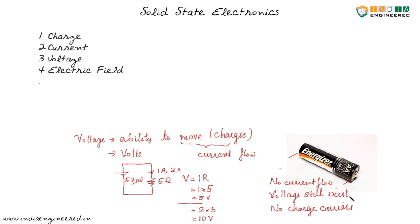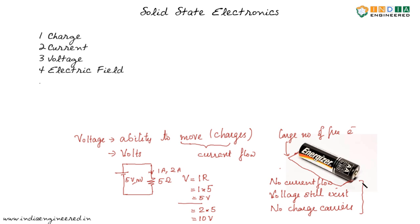Insulators have a scarcity of free electrons. To allow current to flow, you simply connect the two terminals using a conductor. Conductors have a large number of free electrons, so now current can flow. This concept — that voltage can exist even without current flow — is really important when we talk about barrier potential in p-n junction devices. When we apply a voltage, it has a tendency to cause current flow provided there are sufficient charge carriers.